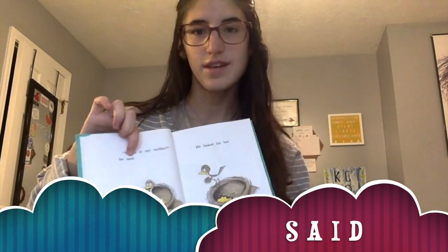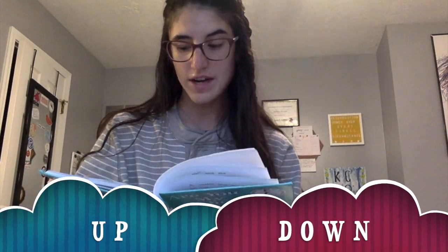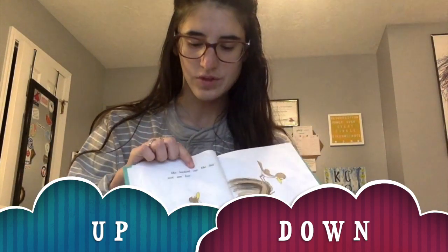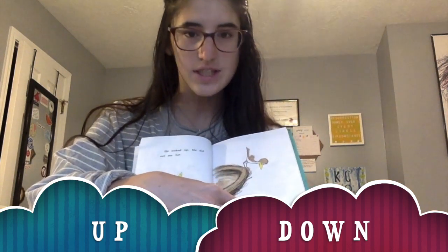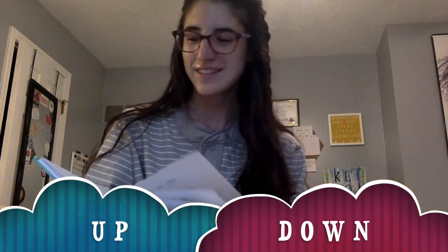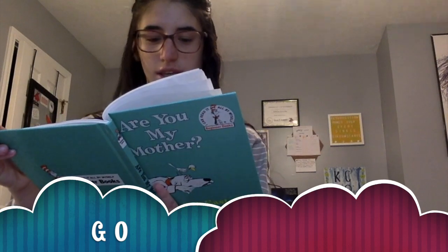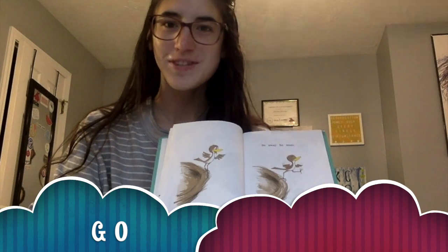Where is my mother? He said. He looked up. He did not see her. He looked down. He did not see her. There's two on this part — up is U-P and down is D-O-W-N. I will go and look for her, he said. So away he went. This sight word is go — G-O.